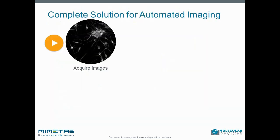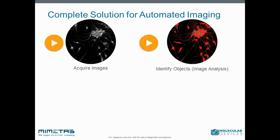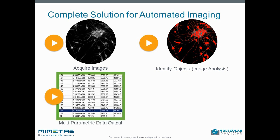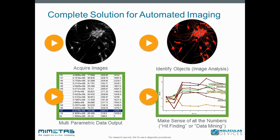The complete solution for automated imaging begins with reliably acquiring in-focus images of every site and with the ability to collect images over a wide z-plane if using a 3D sample. Then you will identify objects using algorithms designed for your specific assay type, and you will receive multiple measured parameters from the image analysis. You can use the data analysis application to pull numbers out of the database for generation of EC50 or IC50 curves, or to use it with hit-finding methods.